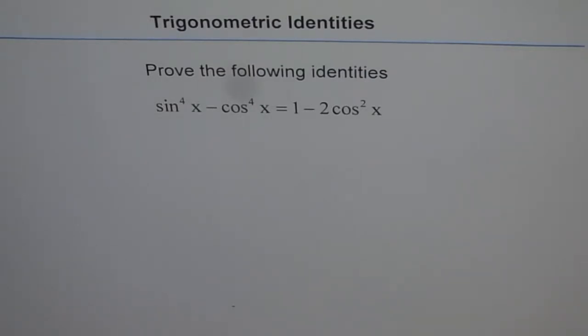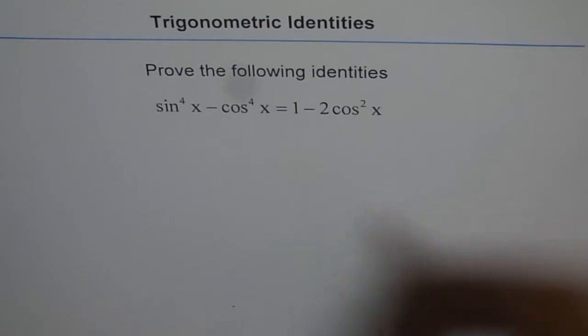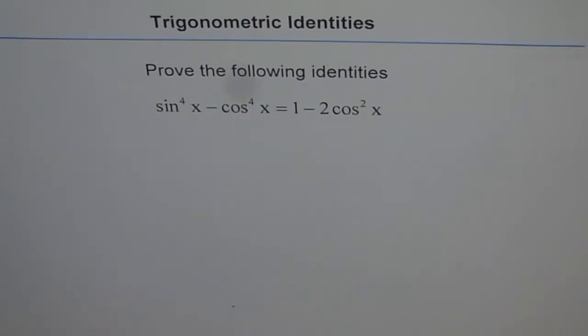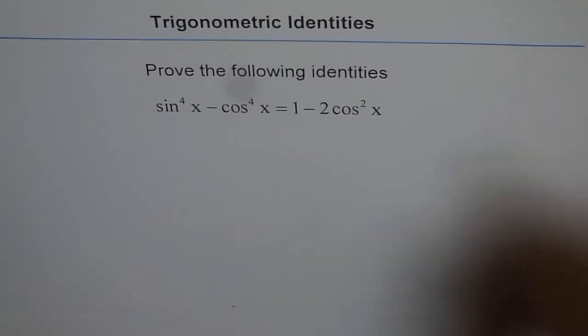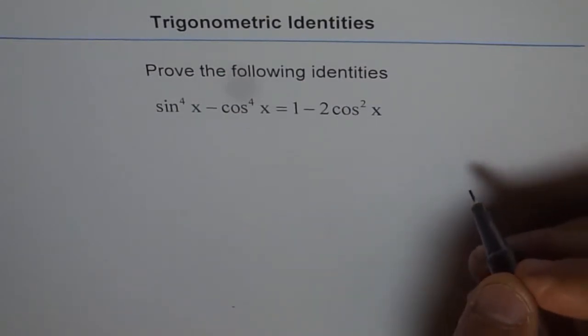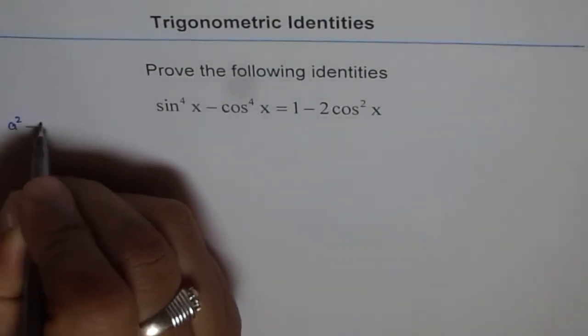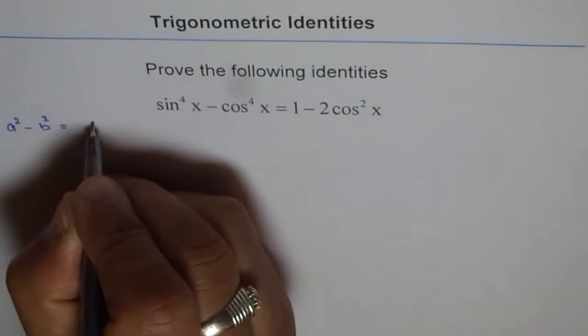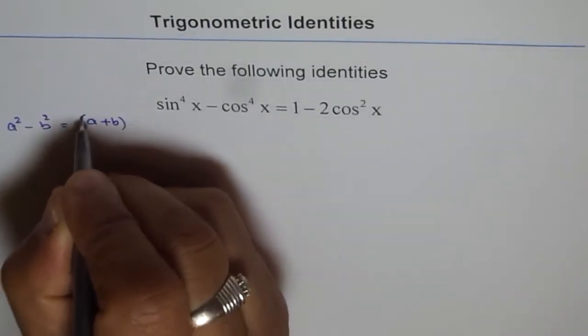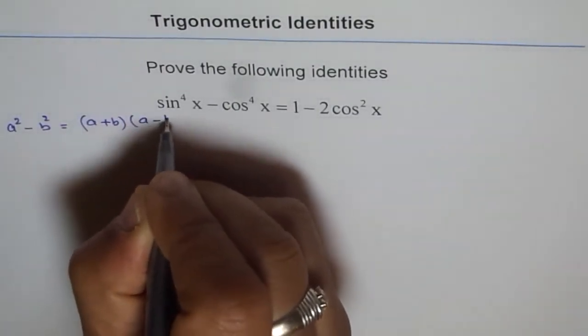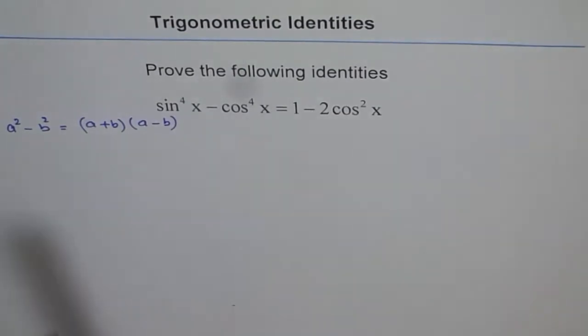Now here what we can do is utilize the algebraic identities to prove this. I hope you remember a^2 - b^2 = (a+b)(a-b). We are going to use this property here to solve our equation.